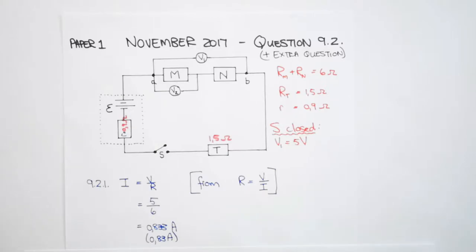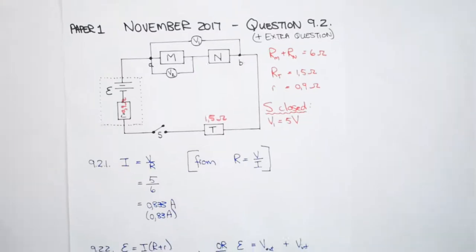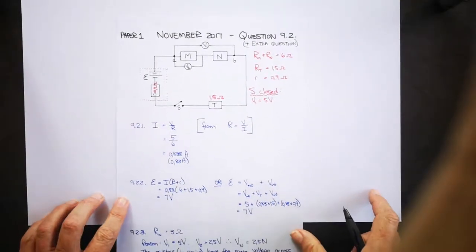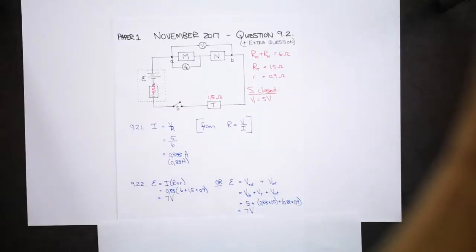Now on 9.2.2, calculate the EMF of the battery. There are two ways of working this one out. I'm going to do the left-hand side one first. This is an equation that you guys have on your data sheets. We have the current.